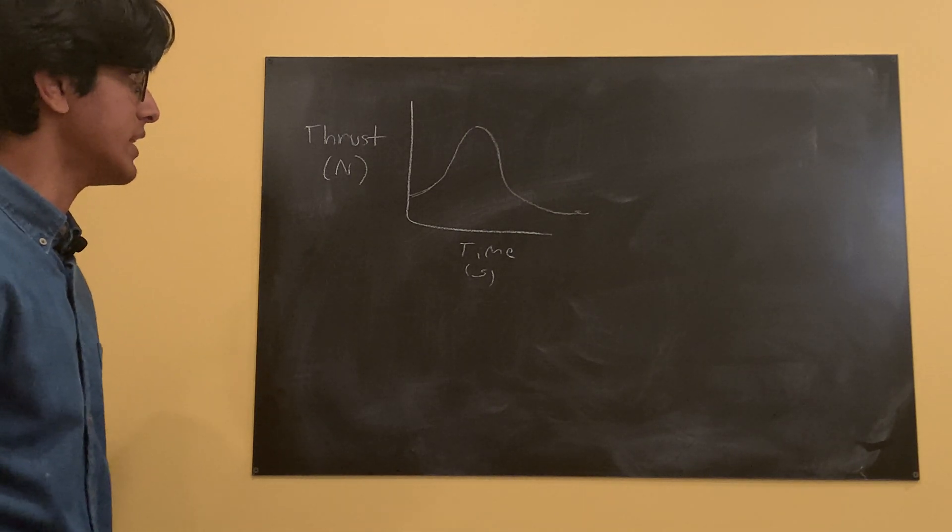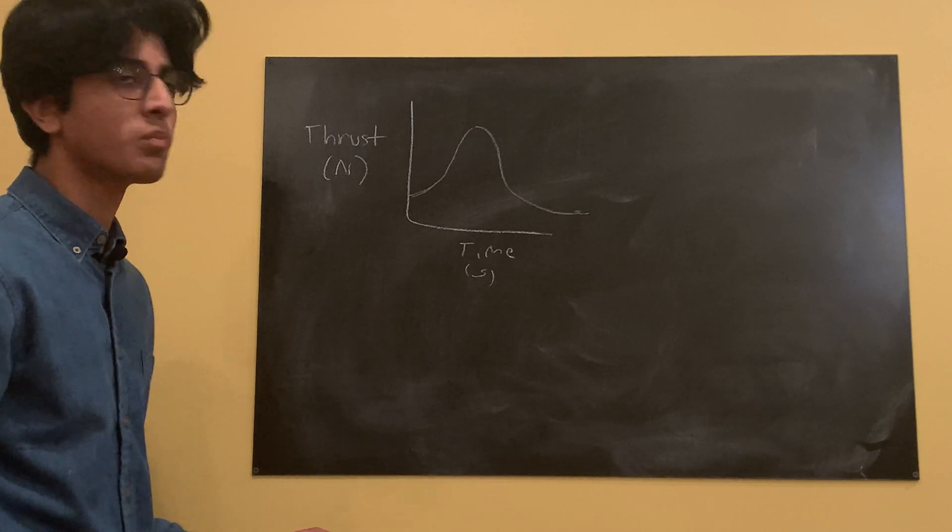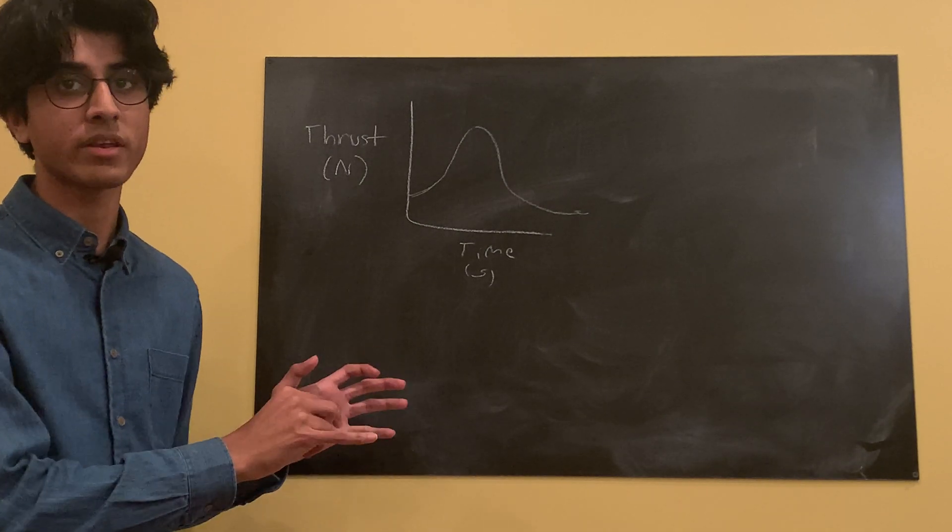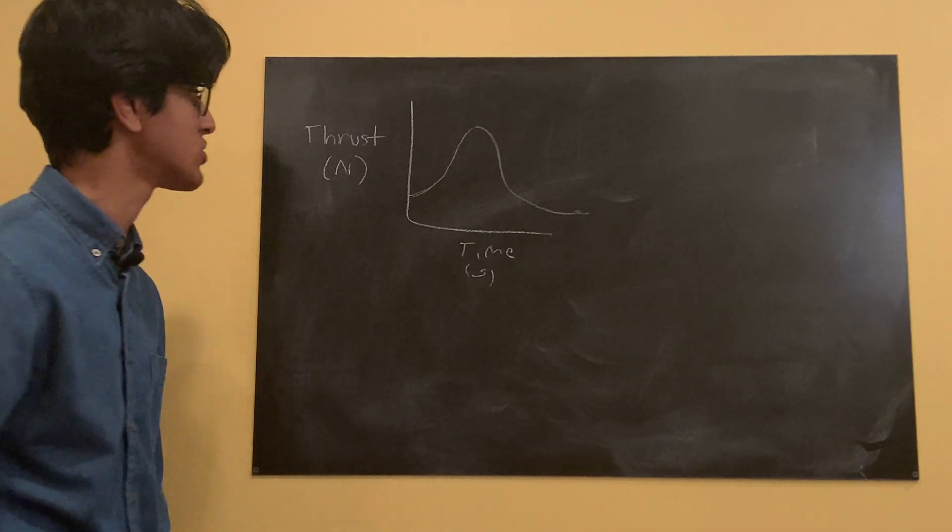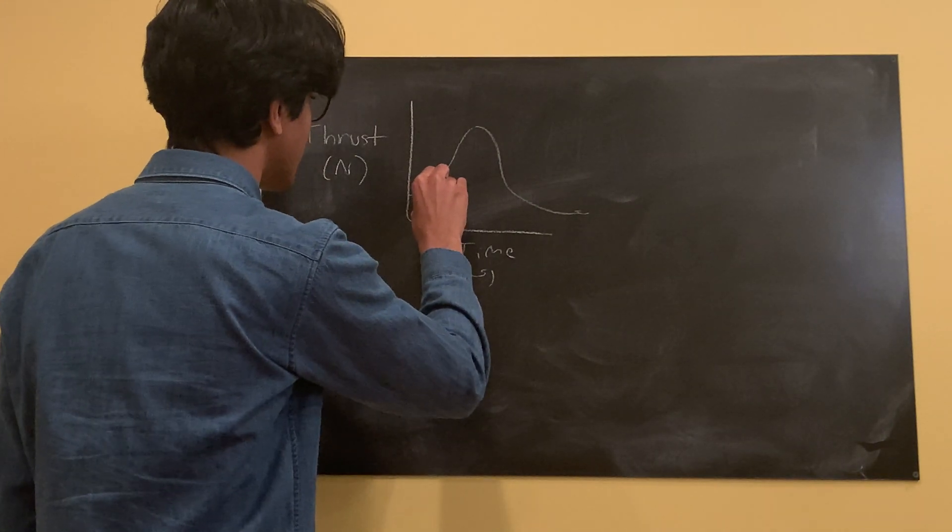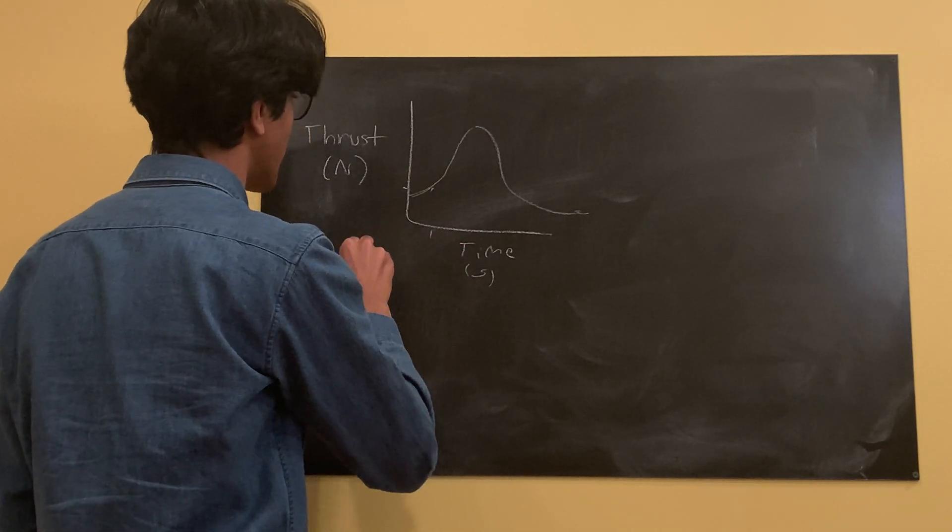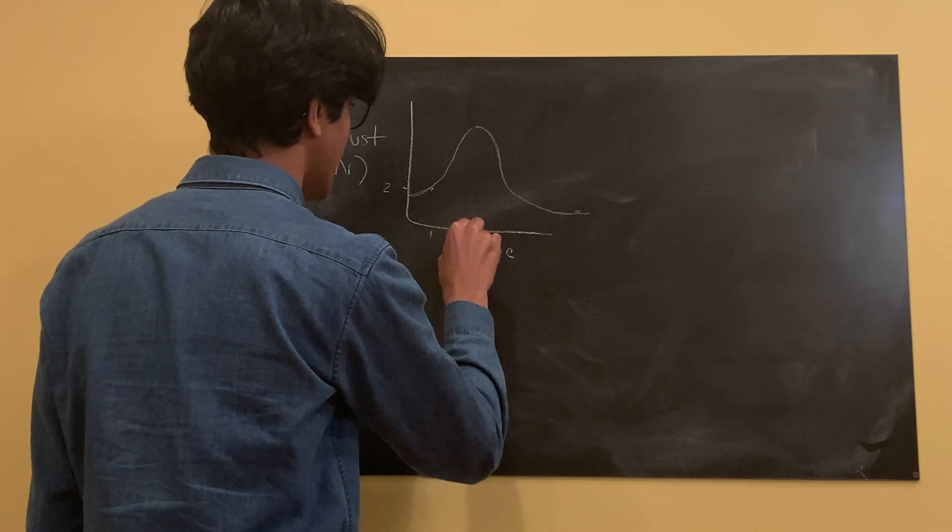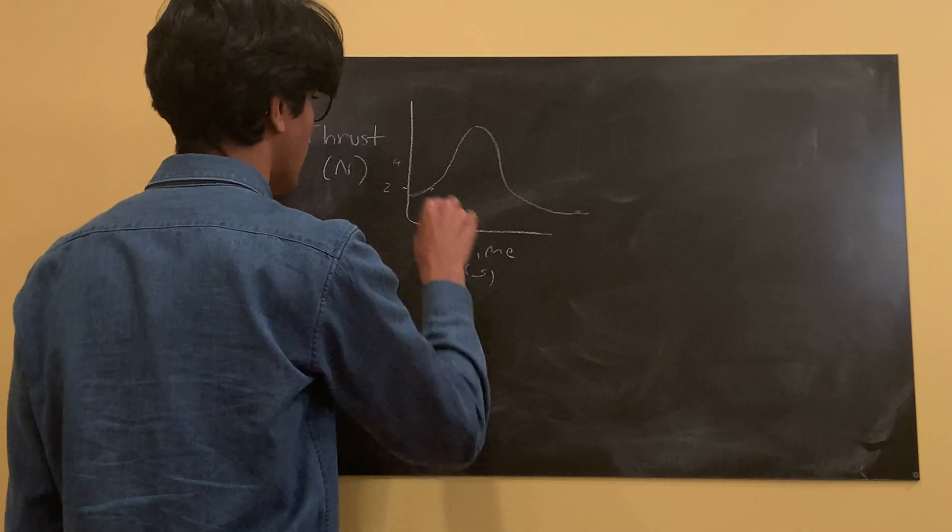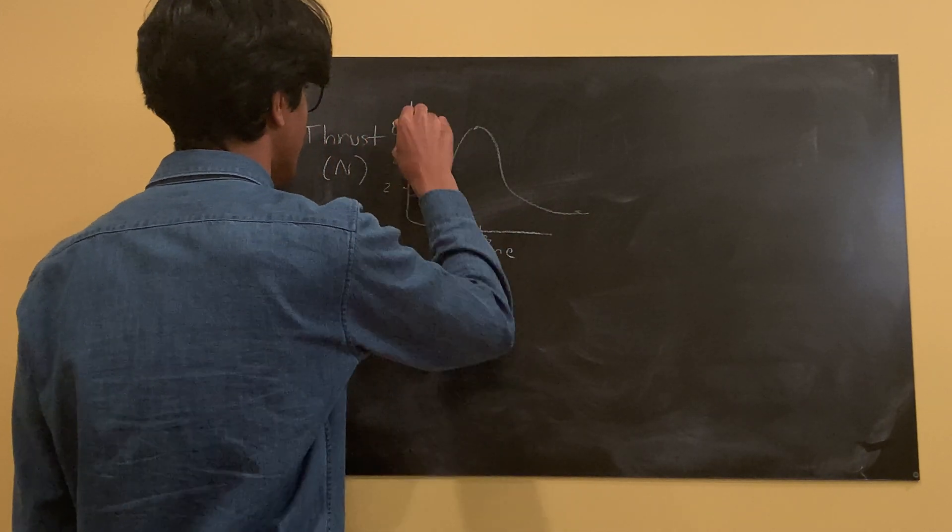And we want to find impulse. So before we do that, let me just put some numbers on here so we can actually do some calculating, since that's the best way to get something down is to actually do it. So let's say over here, at one second, we have a thrust of two. At two seconds, we have a thrust of four. At three, thrust of six.